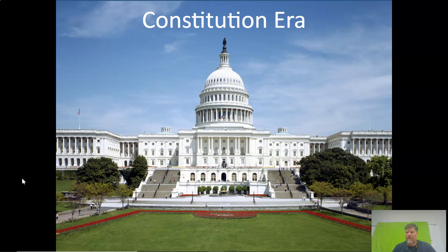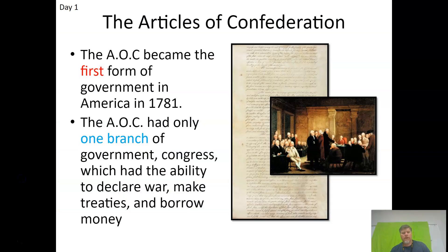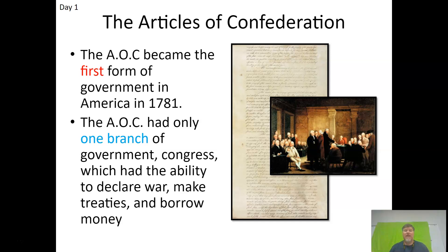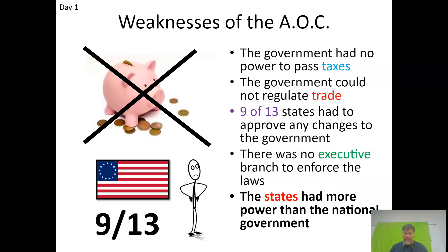The Articles of Confederation is our first Constitution — our first government. It is a confederation government, and it created a weak federal government and strong states. There's only one branch of government, which is Congress. There's no executive branch and no judicial branch. It leaves most of the governing authority with the states — a loose group of states that came together for a few things. It's weak by design, but it's so weak it causes problems.